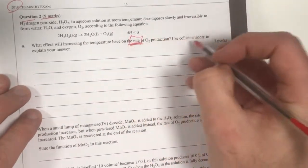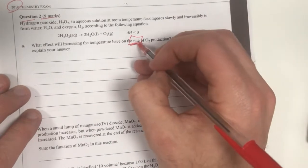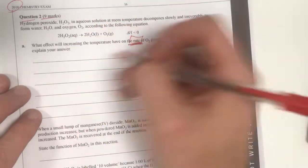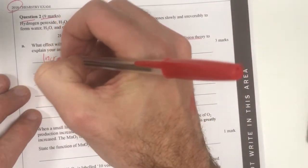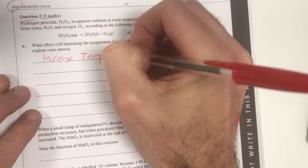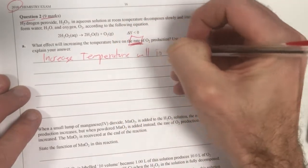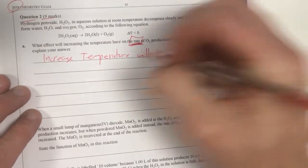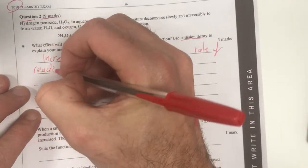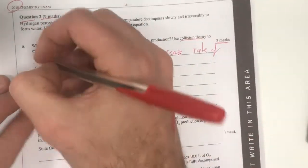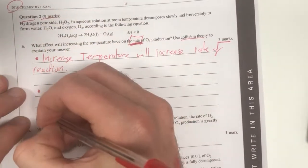So rate - this is where we always need to go with collision theory. It's not a Le Chatelier question, it is a simple collision theory. Increase temperature will increase the rate of reaction. That's my first dot point. It's worth 3 marks, so I'm gonna go with 3 dot points here and try and get those.